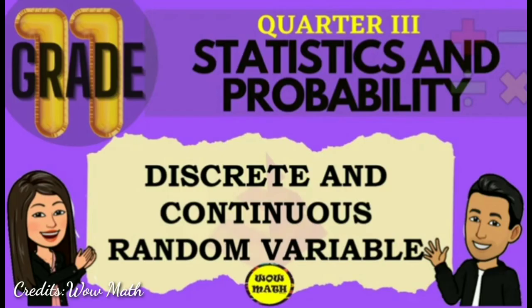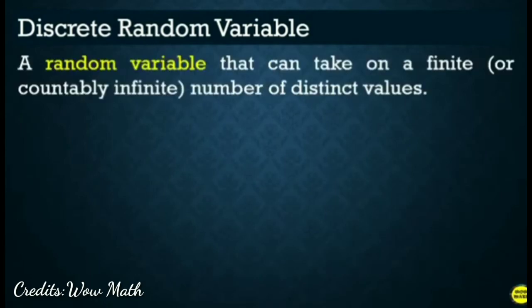In this video lesson, we'll discuss about discrete and continuous random variable. So, ito yung dalawang klase ng random variable. Pag sinabi nating discrete random variable, a random variable that can take on a finite or countably infinite number of distinct values. O sa madaling sabi class, pag sinabi nating discrete random variable, so countable siya. O nabibilang. It is about count data. Kadalasan yung discrete random variable, it's about whole number.